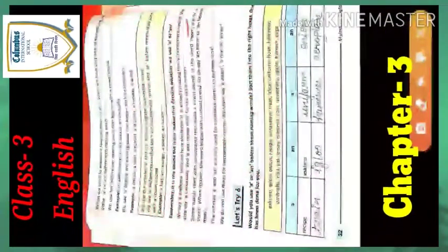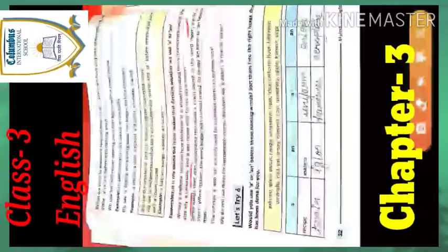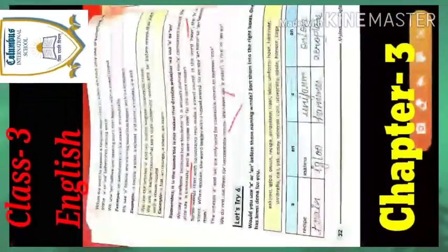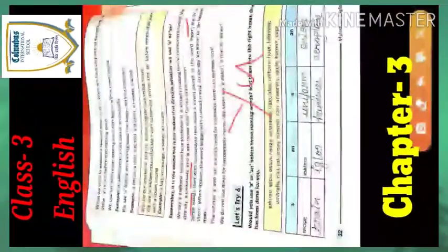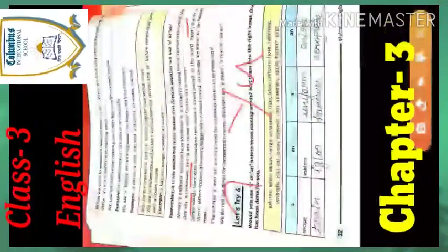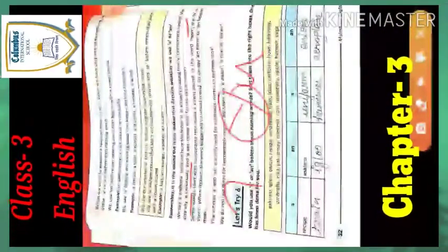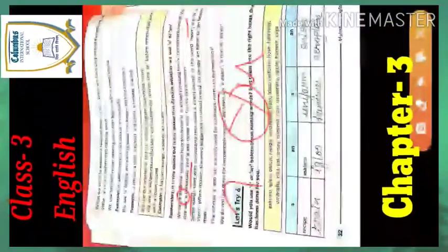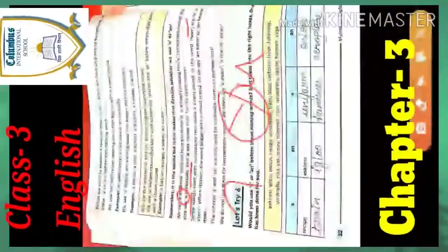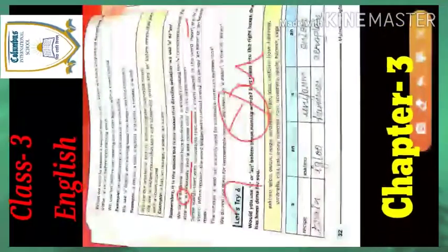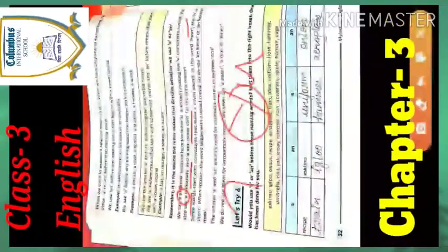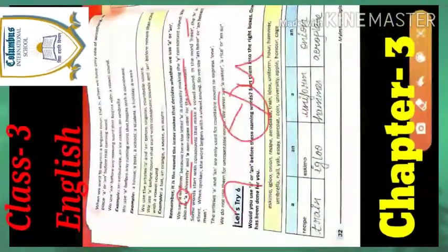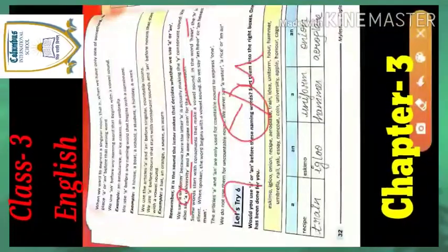Similarly, we also say 'a university' — if you pronounce 'university,' it sounds like 'you-niversity,' making a Y sound, which is a consonant sound. That's why we put the article 'a' before this word. Likewise, 'a one-rupee coin' — for the same reason, it is also making a consonant sound.